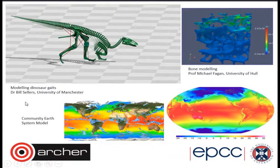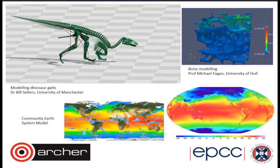The next example is bone modelling, top right of the screen, from the University of Hull. They use Archer to model bones — not only looking at the bones themselves, but putting forces on them to see how they bend, how cracks might propagate, and how bones might snap. They also look at different materials and how these interact with bones, for example to determine the best material to use when replacing a joint. At the bottom, there's the Community Earth System Model, one of the weather and climate models that runs on Archer, along with the Unified Model — very popular in this country — used by a whole load of meteorologists and climate researchers.